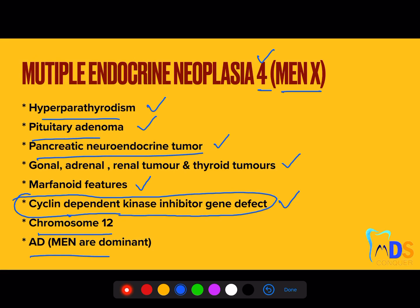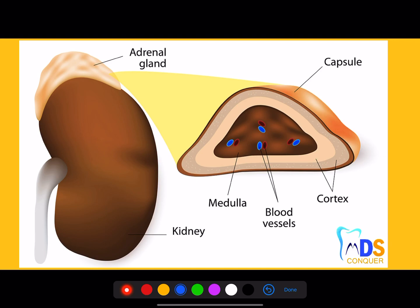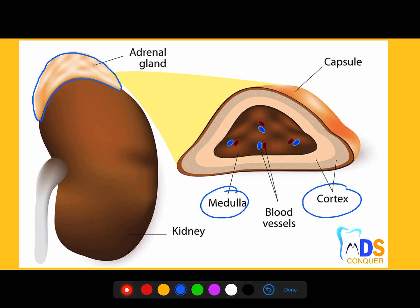Once done with MEN syndrome, the next most important aspect — with many exam questions — is pheochromocytoma. The adrenal gland is in close association with the kidney and has two major parts: the cortex and the medulla. The medulla contains chromaffin cells, which are the primary cause for the occurrence of pheochromocytoma.